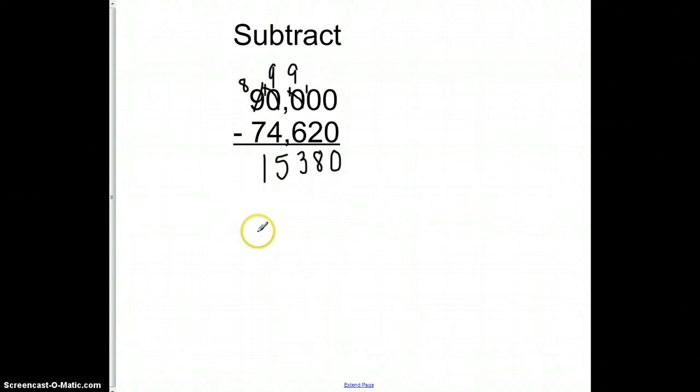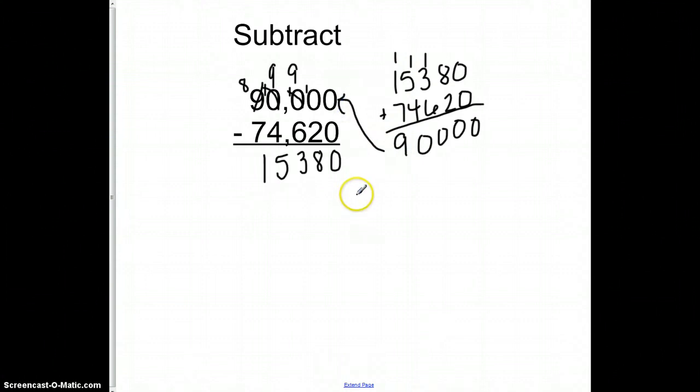I have an answer of 15,380. Remember, if this is borrowing, which this one was, then I would go off on the side and make sure if I take the answer that I got and what I subtracted, and if I add those together, I should end up with that 90,000. If I don't, I need to go back to my problem, figure out what I did wrong, so I can fix it. A lot of times, it's not borrowing correctly, so keep that in mind.